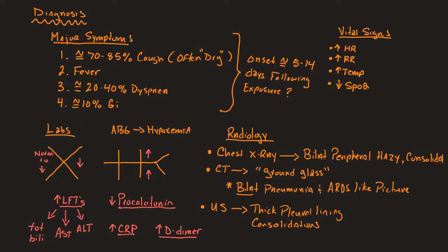So their SAO2, their arterial saturation may be low, their PAO2, their partial pressure of oxygen may be low. And there is also something called the PF ratio. This is a common respiratory calculation we can do. It is the PAO2 divided by the FiO2.